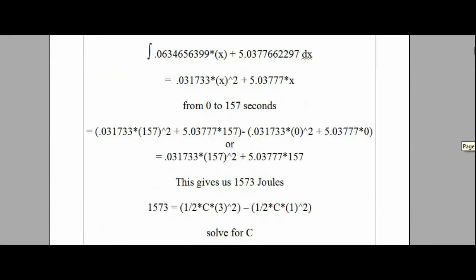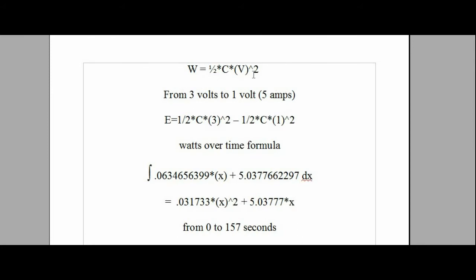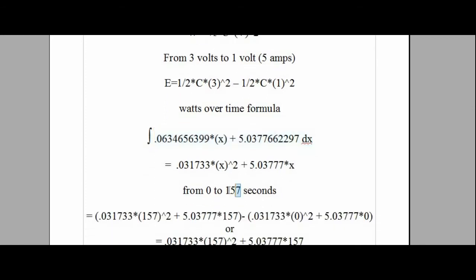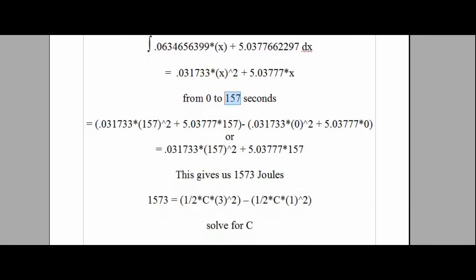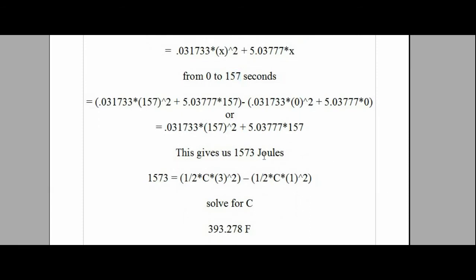Now when I do the same thing at 5 amp charge, if I was right in my assumption, this 5 amp charge would give us a higher capacitance value from the internal resistance basically losing less power in the charging process. So I go through the same process here. Find the formula just like I did on the quarter amp charge. This one took 157 seconds to go from 1 volt to 3 volts. And it ends up giving me 1,573 joules, which when we solve for the capacitance comes out to 393 farads.